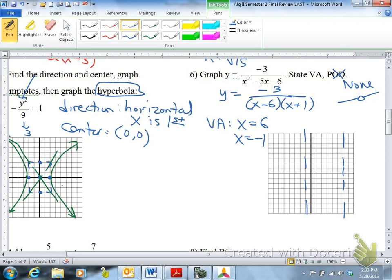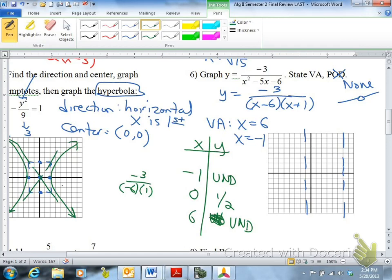The graph's going to approach that point. In our table, we can put negative 1 and 6 on our table, and we're going to have to pick three other x values around our asymptotes, one in each region. That's undefined. So for instance, when we plug zero into this function, we would have negative 3 over 0 minus 6, 0 plus 1. So that would be a half. Zero, a half.